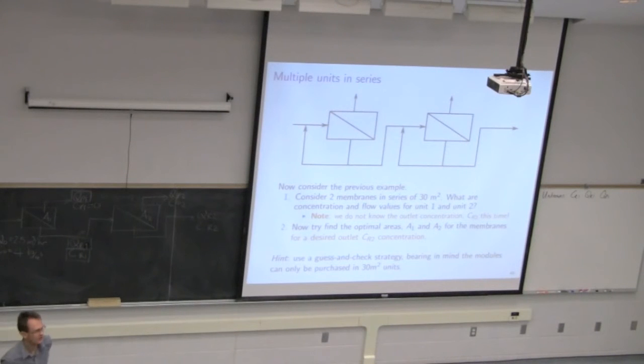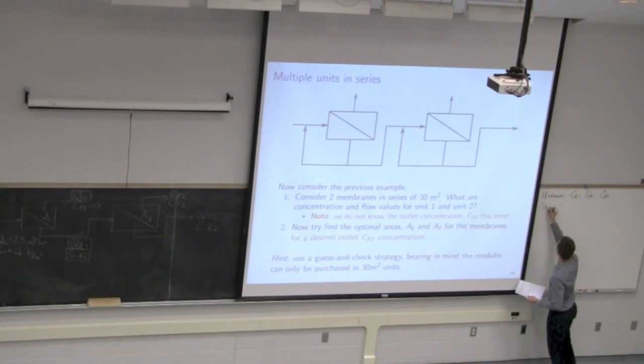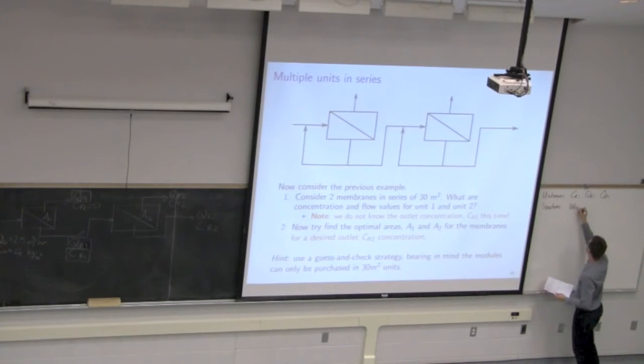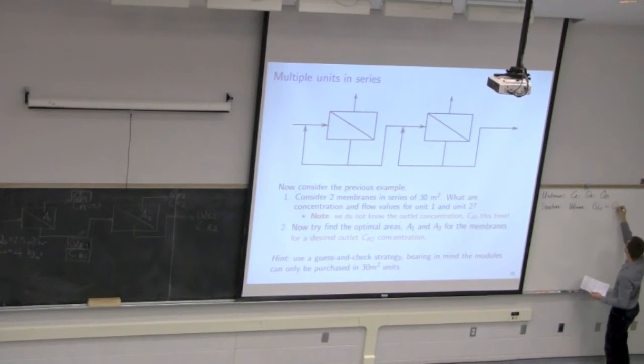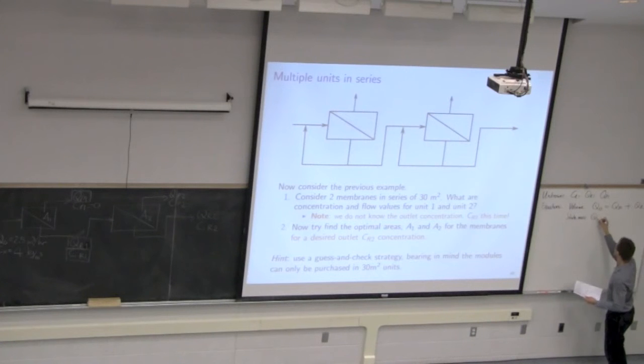Still on part one over here, we're saying for a given membrane of 30 meters squared, and another membrane of 30 meters squared at A2, what is the concentration of this intermediate stream, and then the concentration of that final stream? So we set up the three equations. There was a balance on the standard equations. We'll always have a volume balance. So volume balance gives me that Q0 equals QP1 plus QI1.